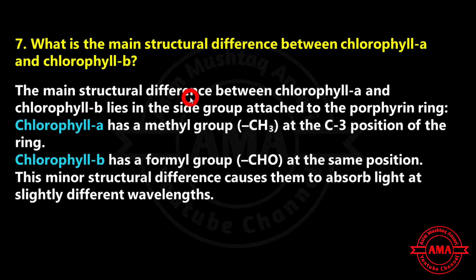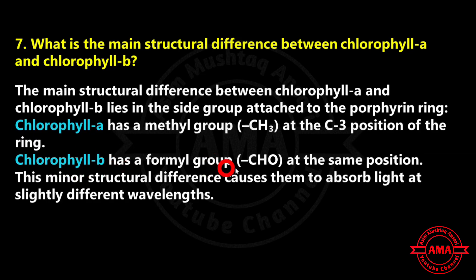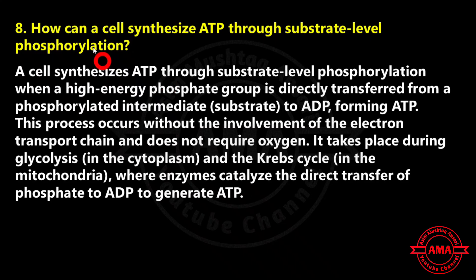This process occurs in the cytoplasm and does not require oxygen. During glycolysis, a small amount of energy is released, producing two molecules of ATP and two molecules of NADH, which are later used in other stages of respiration. Next: what is the main structural difference between chlorophyll A and chlorophyll B? The main structural difference lies in the side group attached to the porphyrin ring. Chlorophyll A has a methyl group at the carbon-3 position, while chlorophyll B has a formyl group at the same position, causing them to absorb light at slightly different wavelengths.